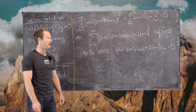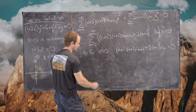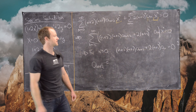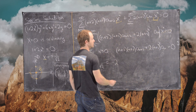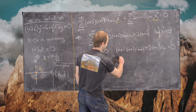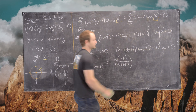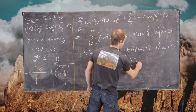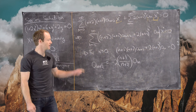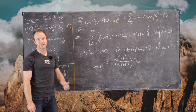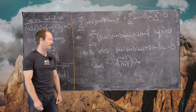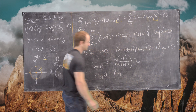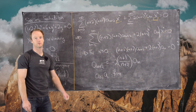Solving for a sub n plus 2 gives the recurrence relation: a sub n plus 2 equals negative 2 times (n plus 1) over (n plus 2) times a sub n. One factor of n plus 1 cancels, leaving this two-step recurrence. This gives information about a sub 2, a sub 3, a sub 4, and so on. The coefficients a sub 0 and a sub 1 are free parameters.